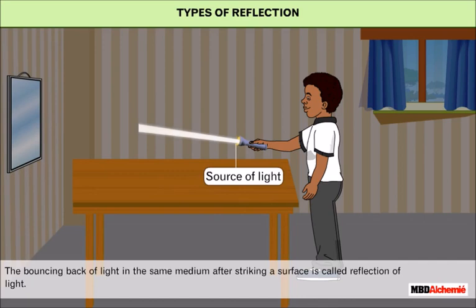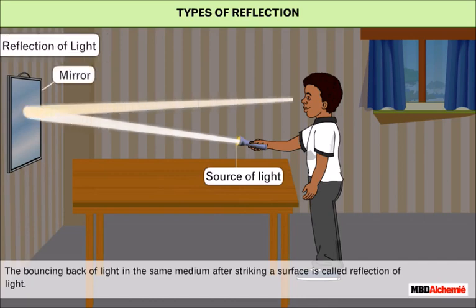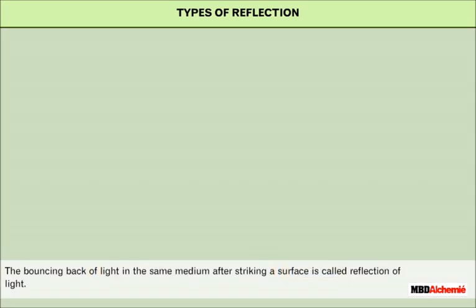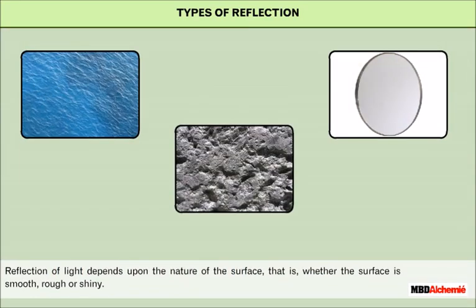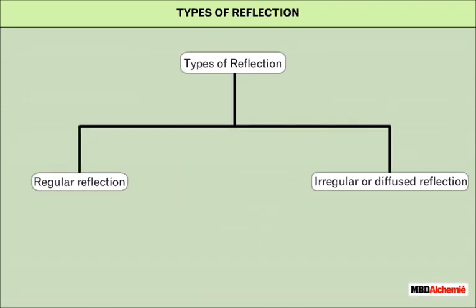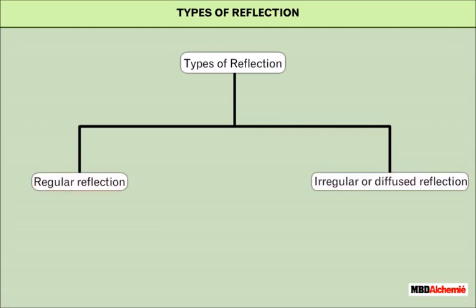Reflection of light depends upon the nature of the surface, i.e., whether the surface is smooth, rough, or shiny. Depending on the surface, reflection of light can occur as regular reflection and irregular or diffuse reflection.